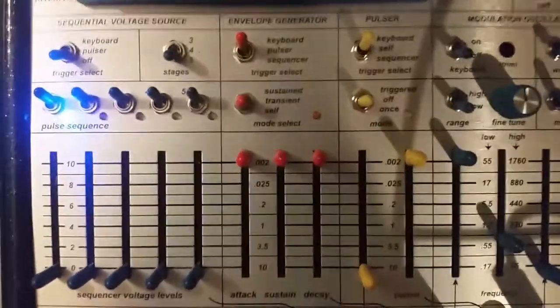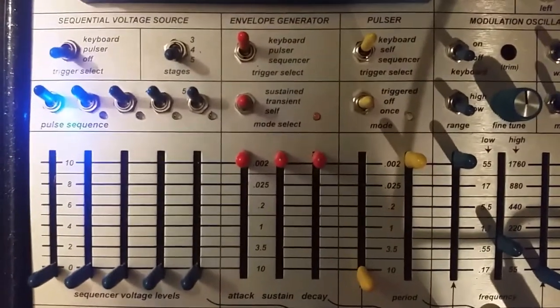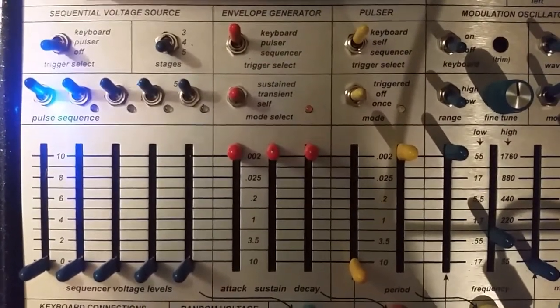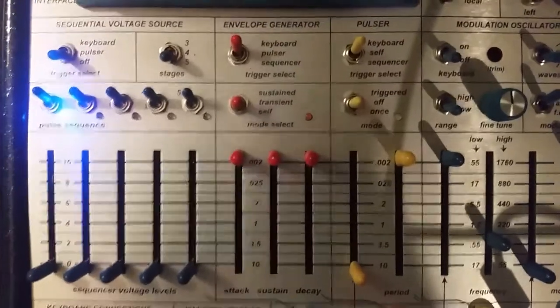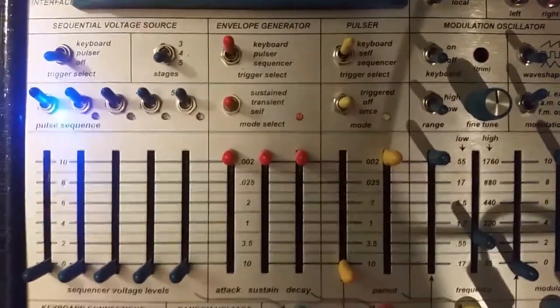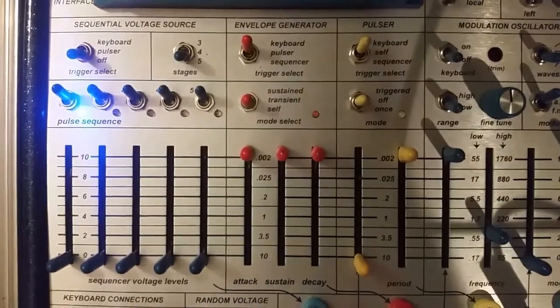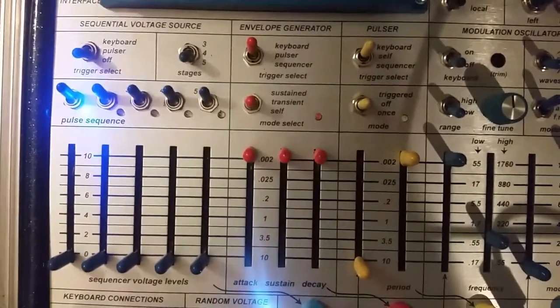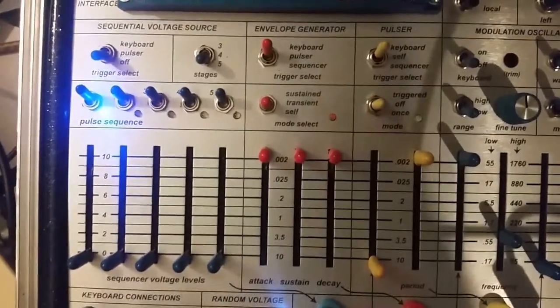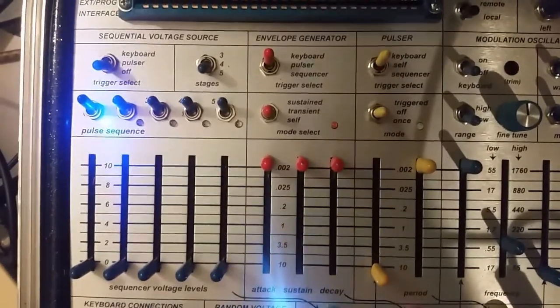So we will see here that I have the envelope generator set to keyboard and set to transient. I'll hit a note on the 218 keyboard and we do get a single fire of the envelope generator with a very short attack and decay and no sustain.